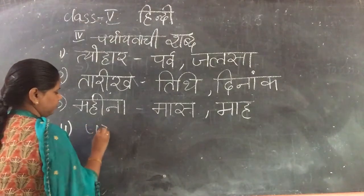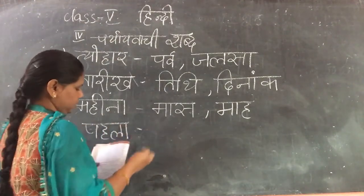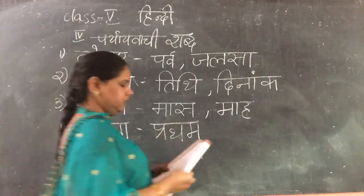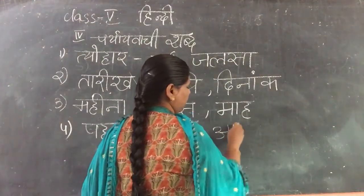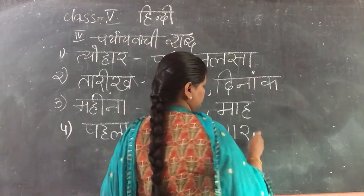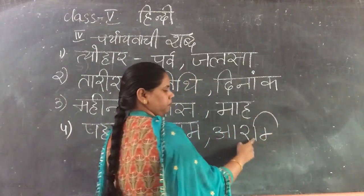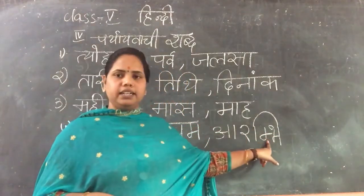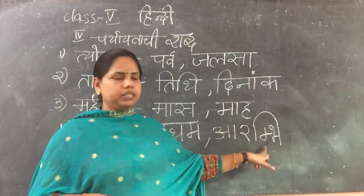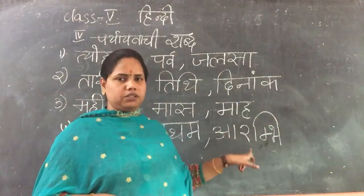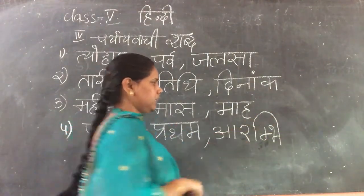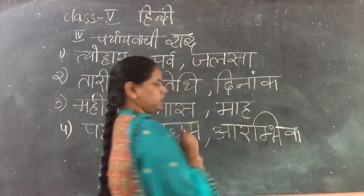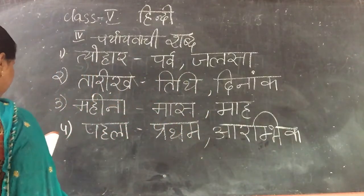Next: Pahla means First. It is also known as Pratham and Aarambik. Whenever a half letter is coming before another letter and the e ki matra is added, we add that letter inside. Pahla — Pratham — Aarambik.